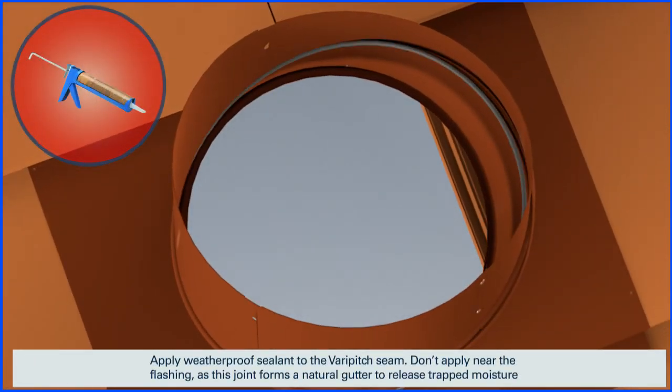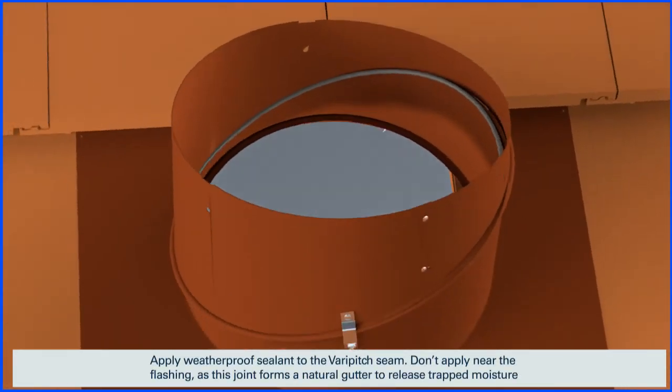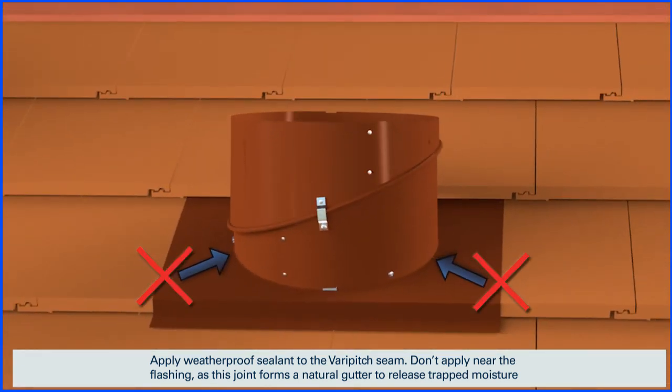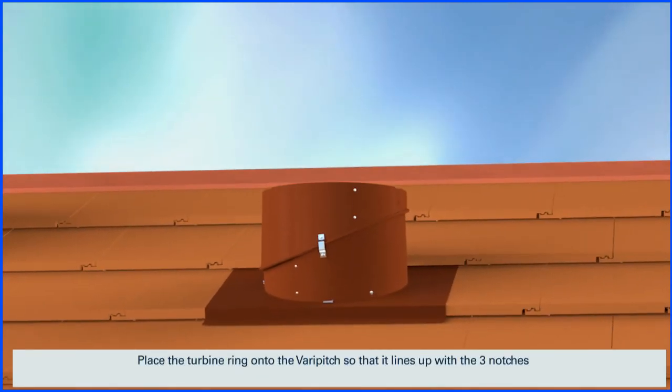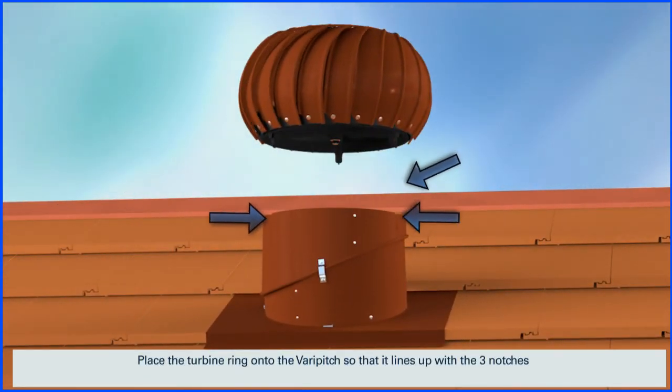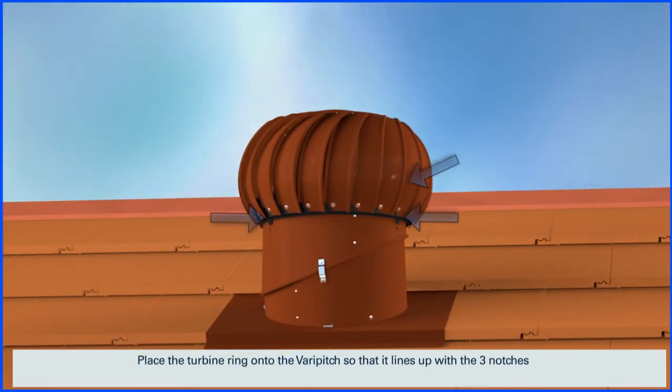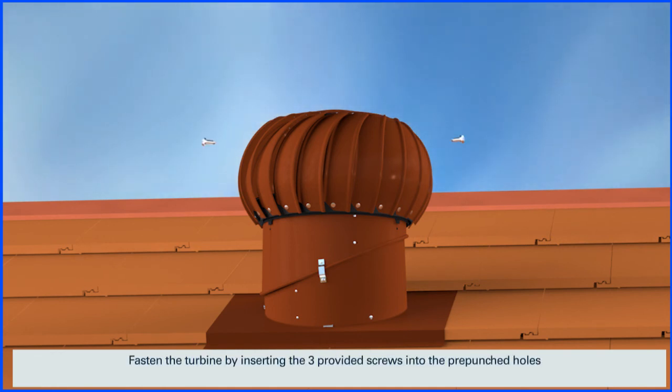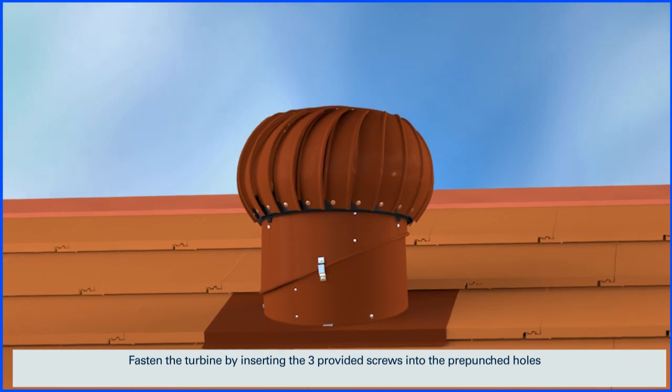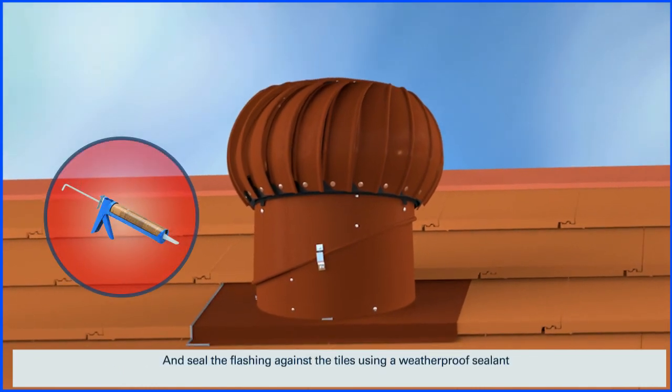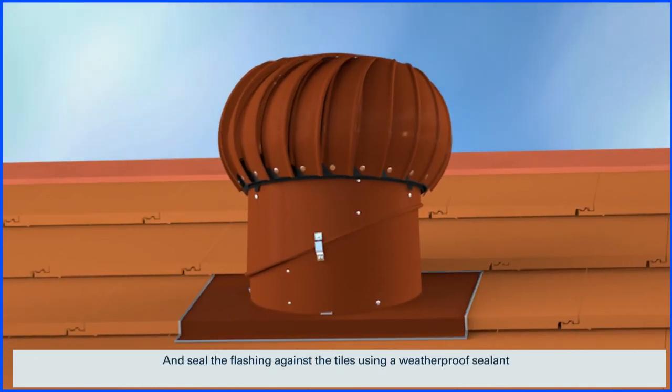Apply the weatherproof sealant to the VeriPitch seam. Don't apply near the flashing as this joint forms a natural gutter to release trapped moisture. Place the turbine ring onto the VeriPitch so that it lines up with the three notches. Fasten the turbine by inserting the three provided screws into the pre-punched holes and seal the flashing against the tiles using a weatherproof sealant.